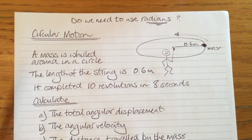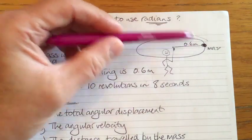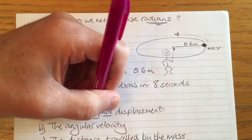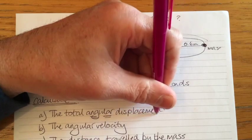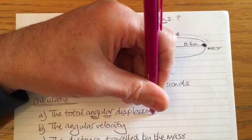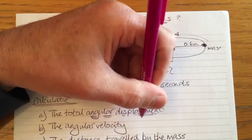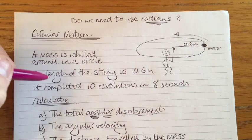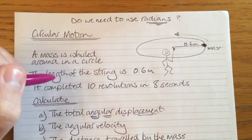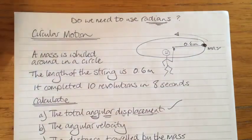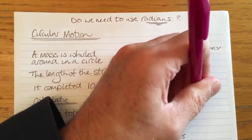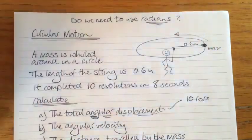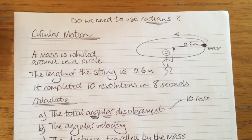What is the total angular displacement of the mass? Before we do that, let's talk about what we actually mean by angular displacement. You should know about displacement from last year — displacement is a measure of how far you've gone from start to finish. Well, angular displacement is how far you have turned from the start to the finish. In this case, it's 10 revolutions. That is the angular displacement: 10 revs.